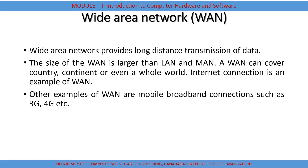The third type, which has no distance limit, is called Wide Area Network (WAN). WAN provides long-distance transmission of data, allowing you to share data to any part of the world. The communication medium used here is satellite communication. Examples of WAN include mobile networks such as 3G, 4G, and 5G.